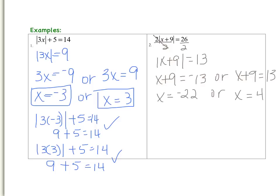So now let's check and see if it is true. I am going to substitute negative 22 for x inside the absolute value bars. So what is negative 22 plus 9? That is negative 13. So I have 2 times the absolute value of negative 13, and it should equal 26. The absolute value of negative 13 is positive 13. So I have 2 times positive 13, which is 26. So 26 equals 26 — that means this is a good solution.